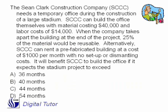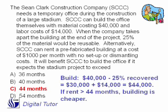Last one — freeze your frame and work this one. The cost to build it, the incremental cost, is the $40,000 less what you could recover, so that's a net of $30,000 plus the $14,000 labor. If you rent for 44 months, then the costs are exactly equal. If you rent for longer than 44 months, then building is cheaper.